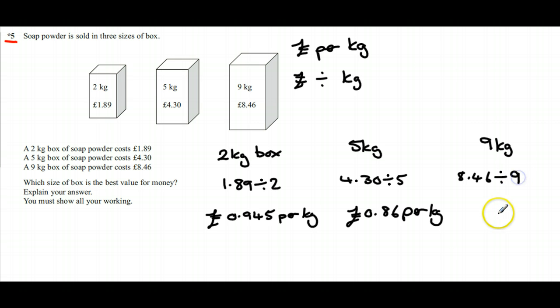So as you can see, the 5 kilogram box is the best value because it's the least amount of money for a kilogram. And because of the asterisk, we're going to finish off with a full sentence.